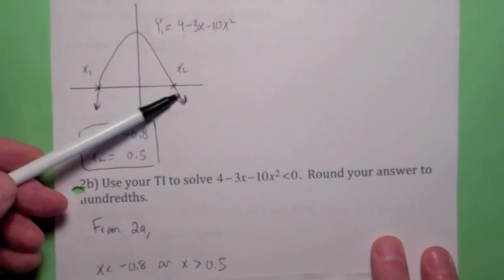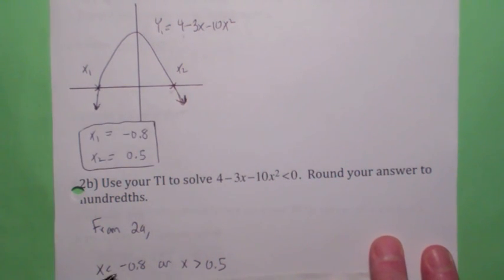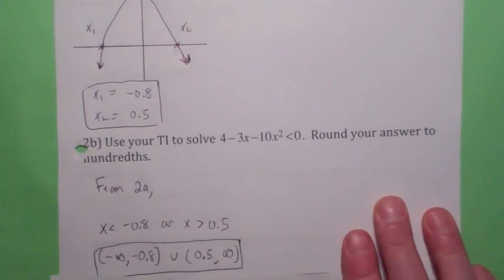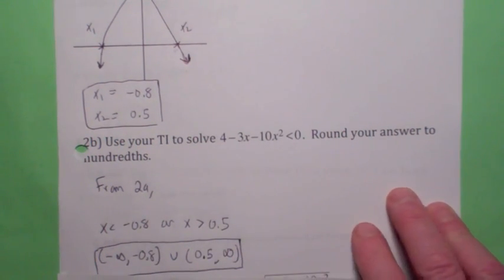And also, over here, when x is greater than 0.5. So this would be the solution. When x is less than negative 0.8 or when x is greater than 0.5, this inequality is true. So you can do that. You could write it in interval notation as well.